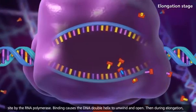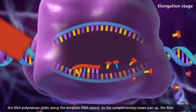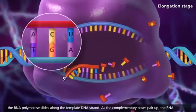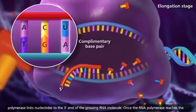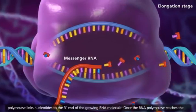Then during elongation, the RNA polymerase slides along the template DNA strand. As the complementary bases pair up, the RNA polymerase links nucleotides to the three-prime end of the growing RNA molecule.